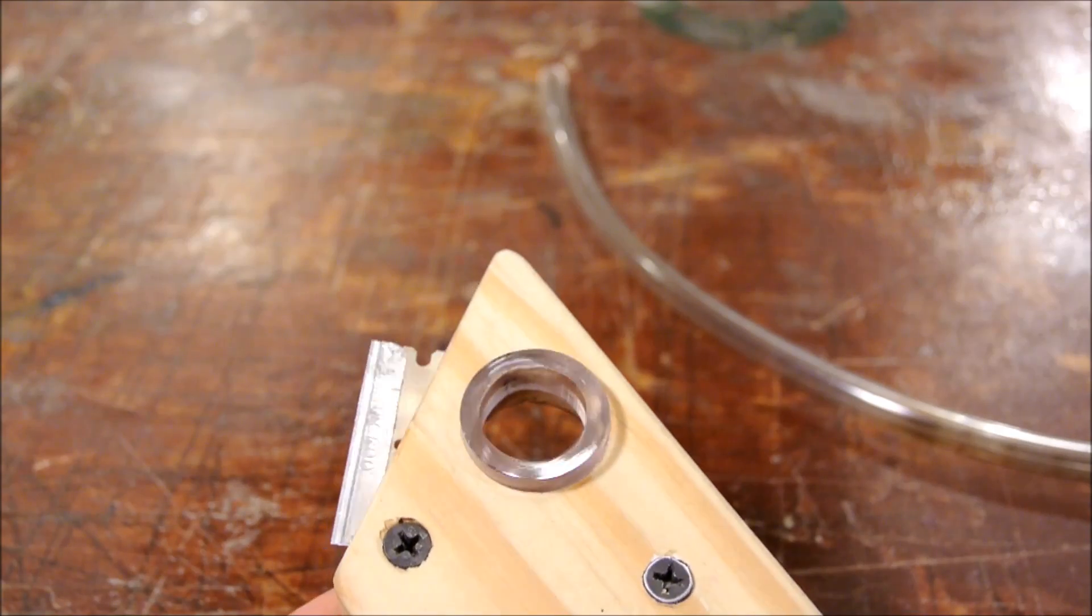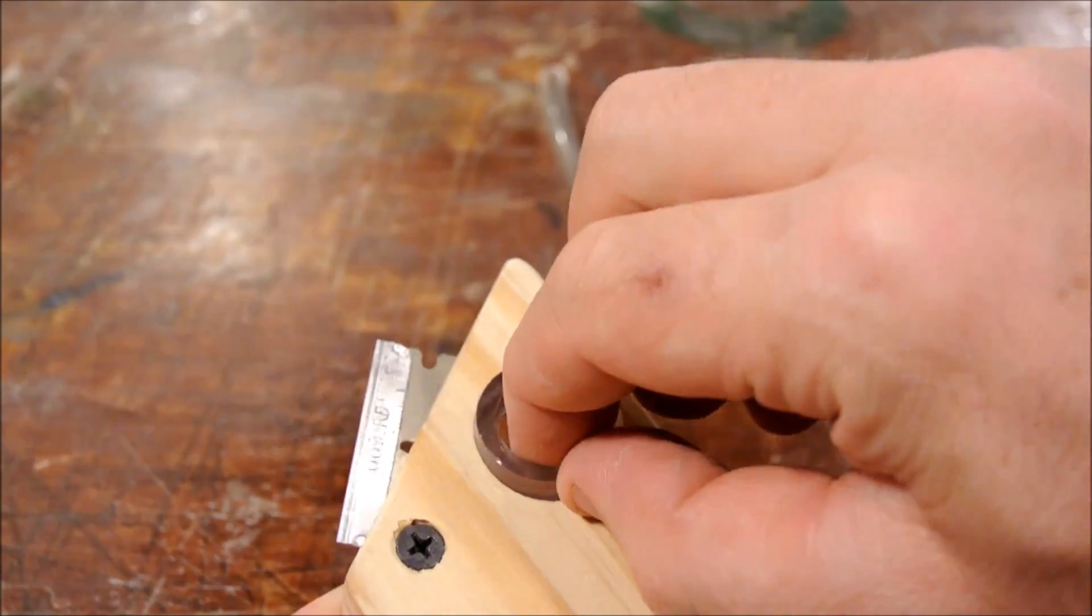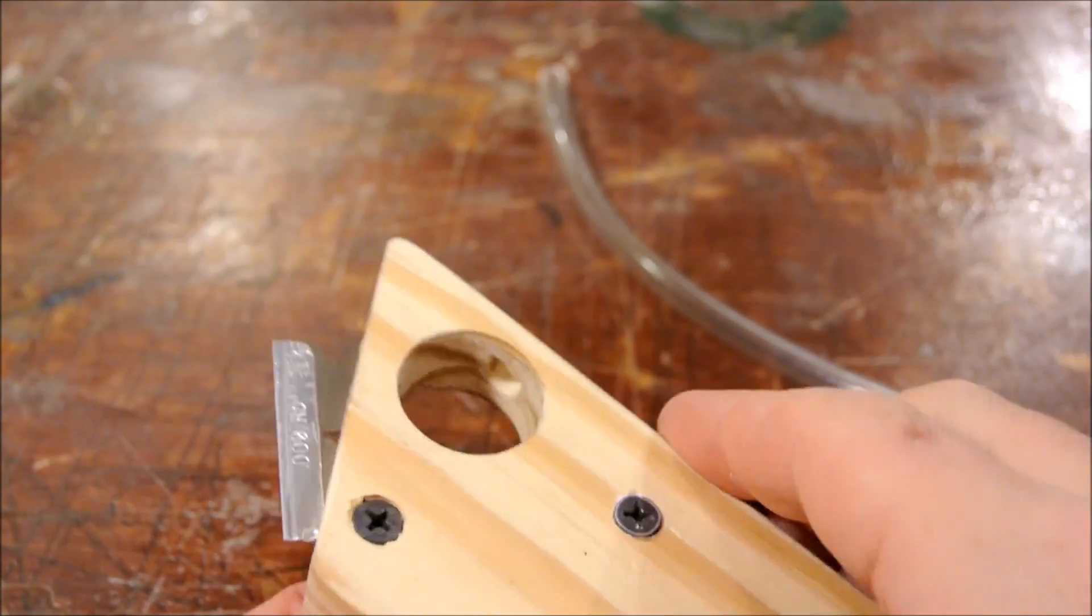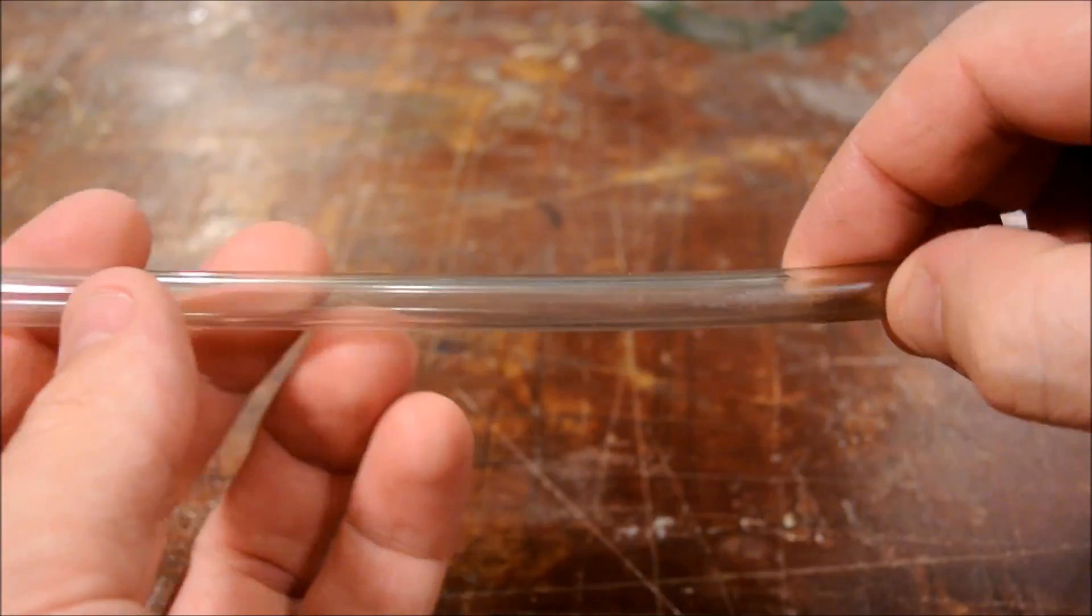Now I've also made one of these devices for larger tubing, this one is for one inch and it works just as well, but let's move on to how we can split tubing.